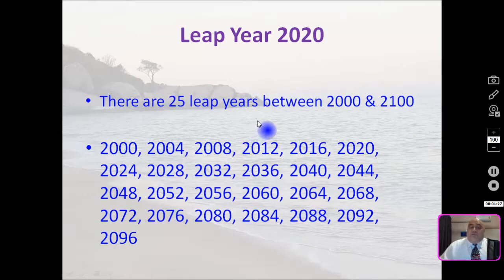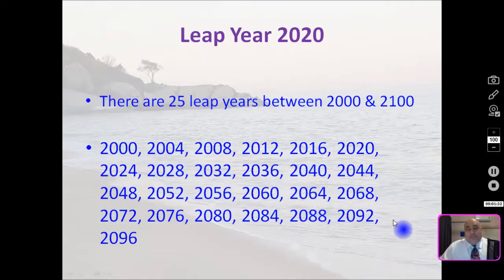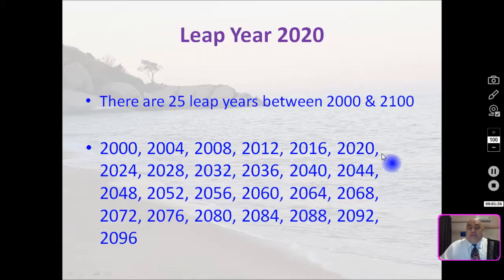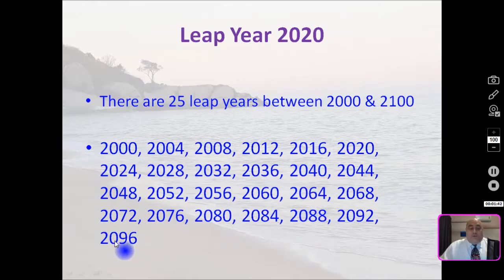There are 25 leap years between 2000 and 2100, and here's the list. Coming up in just a few weeks is 2020, and we will have our next leap day, February 29, going all the way through 2096.